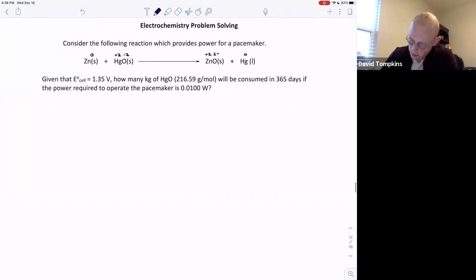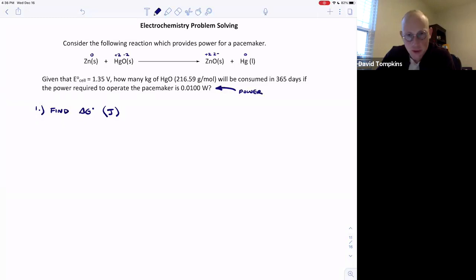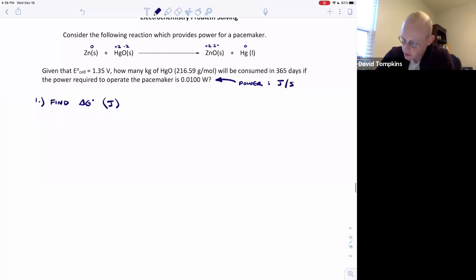We can relate the standard potential of the reaction to the free energy change. The reason we want to find that free energy change in joules is because that's going to tell us about the amount of energy that's released by each mole of mercury oxide. We need joules because we have 0.01 watts and watts are a power or an energy expenditure per unit time. A watt is a joule per second. So that's where this time is going to come from.